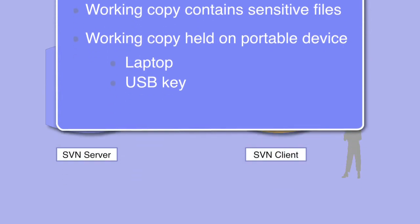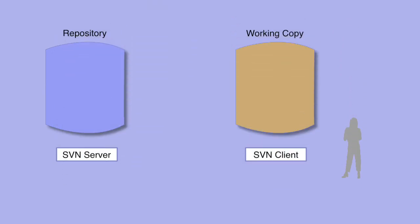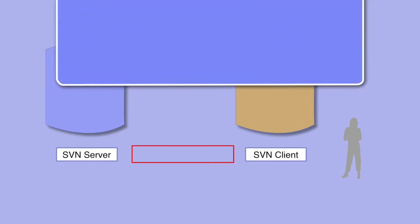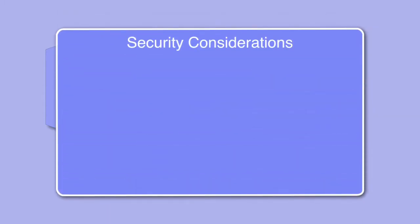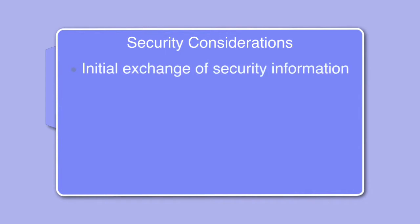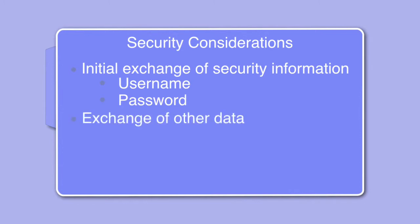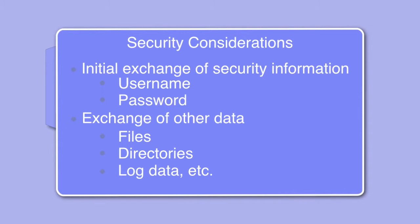The next security issue is the data moving between the client and server. As we shall see as we look more closely at this exchange, there are a number of different strategies for securing this information. The main considerations are the initial exchange of security information like usernames and passwords, the subsequent exchange of data from the repository to the working copy, the transfer of file contents and directory structures, log entries, and any other information supplied to the user from the repository or from the user to the repository.